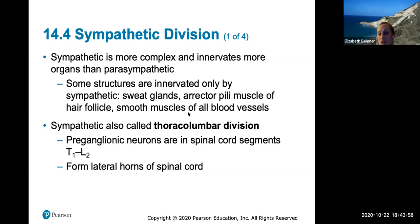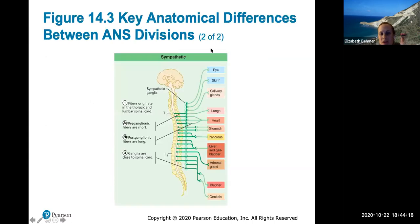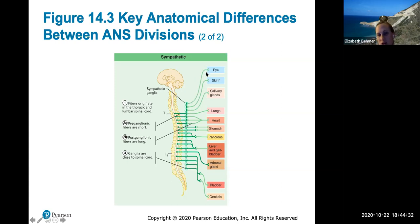The sympathetic division is also known as the thoracolumbar division. Some structures innervated only by the sympathetic include sweat glands, the erector pili muscle — which causes goosebumps when hair stands up — and smooth muscles of all blood vessels, causing constriction or dilation. In the sympathetic division, preganglionic fibers are short, while postganglionic fibers are long, traveling to the target organ. The ganglia are close to the spinal cord.